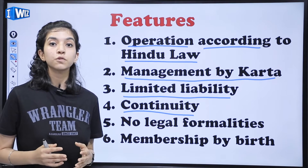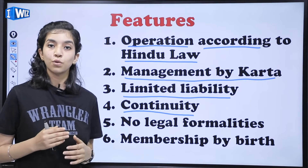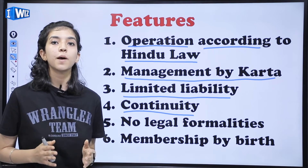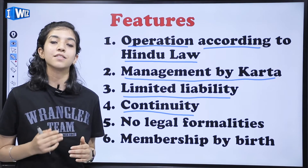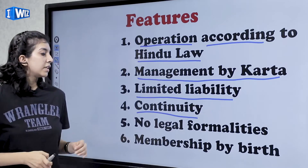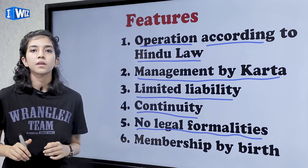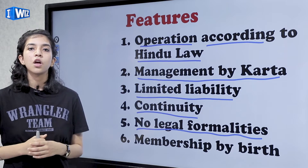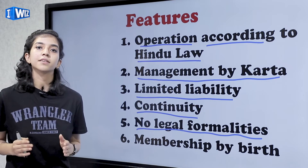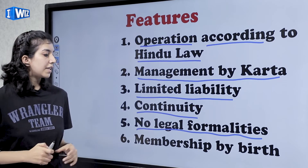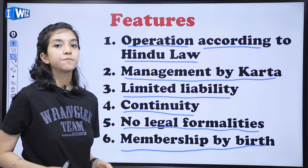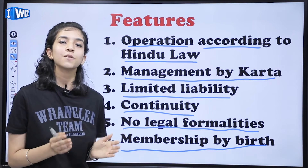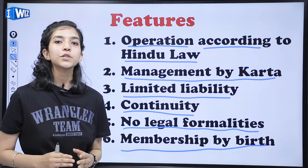If something happens to the karta, the second eldest male member of the family takes the karta's position, and the business goes on. The fifth feature is no legal formalities — forming a joint Hindu family business does not require many legal formalities; you just need to follow the rules laid by Hindu law. The sixth and last feature is membership by birth — as soon as a child is born into the family, they automatically become a part of the business.